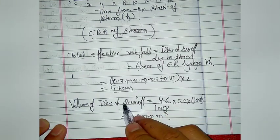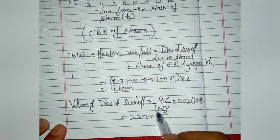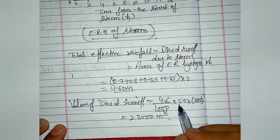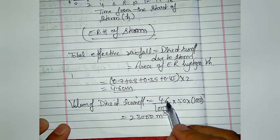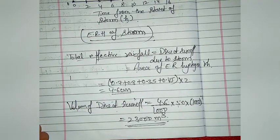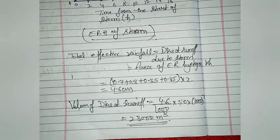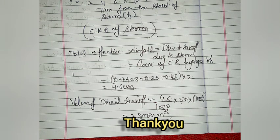The volume of direct runoff is calculated as effective rainfall depth converted to meters (4.6 ÷ 100) multiplied by the catchment area (5×10⁶ m²). This gives a volume of direct runoff equal to 23,000 cubic meters. This is how we draw the effective rainfall hyetograph and calculate direct runoff volume for any given storm.